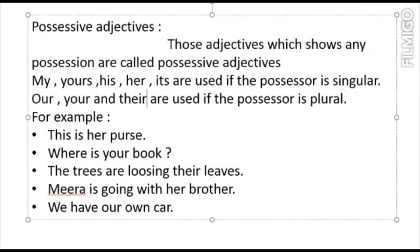'This is her purse.' Her is the possessive adjective because it shows the possession of the purse — this purse belongs to her, some girl. 'Where is your book?' Your is the second person singular, so your is the possessive adjective — this book belongs to you.